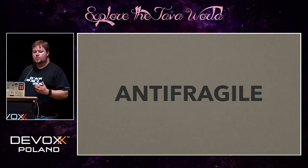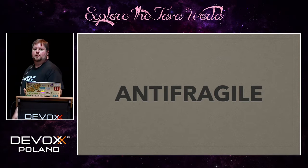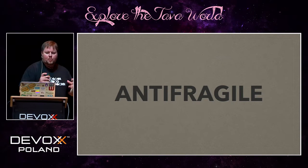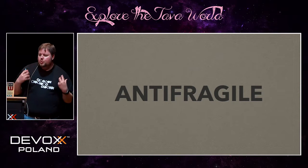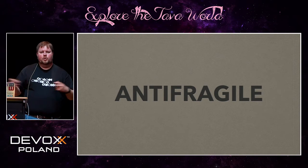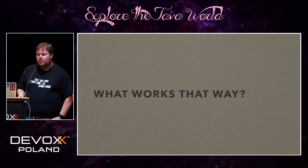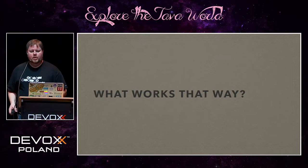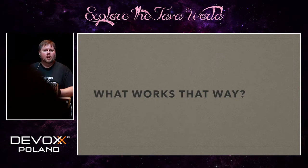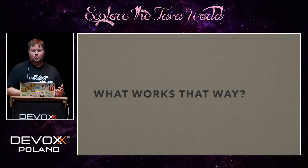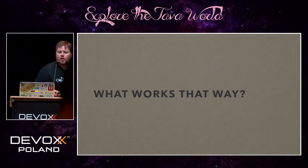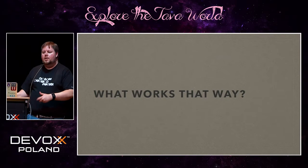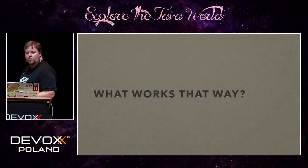Antifragile systems or artifacts thrive under chaos. In fact, many of them don't just thrive under chaos — they require continual exposure to stress in order to function optimally. So, what actually works that way? What in our experience can we point to that has those characteristics? Are there existing non-software systems that we can learn from to help us understand how we can build software that way?